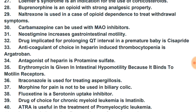Buprenorphine is an opioid with strong analgesic property — just as halothane does not cause analgesia among anesthetics, remember buprenorphine is an opioid with strong analgesic property. Naltrexone is used in a case of opioid dependence to treat withdrawal symptoms.